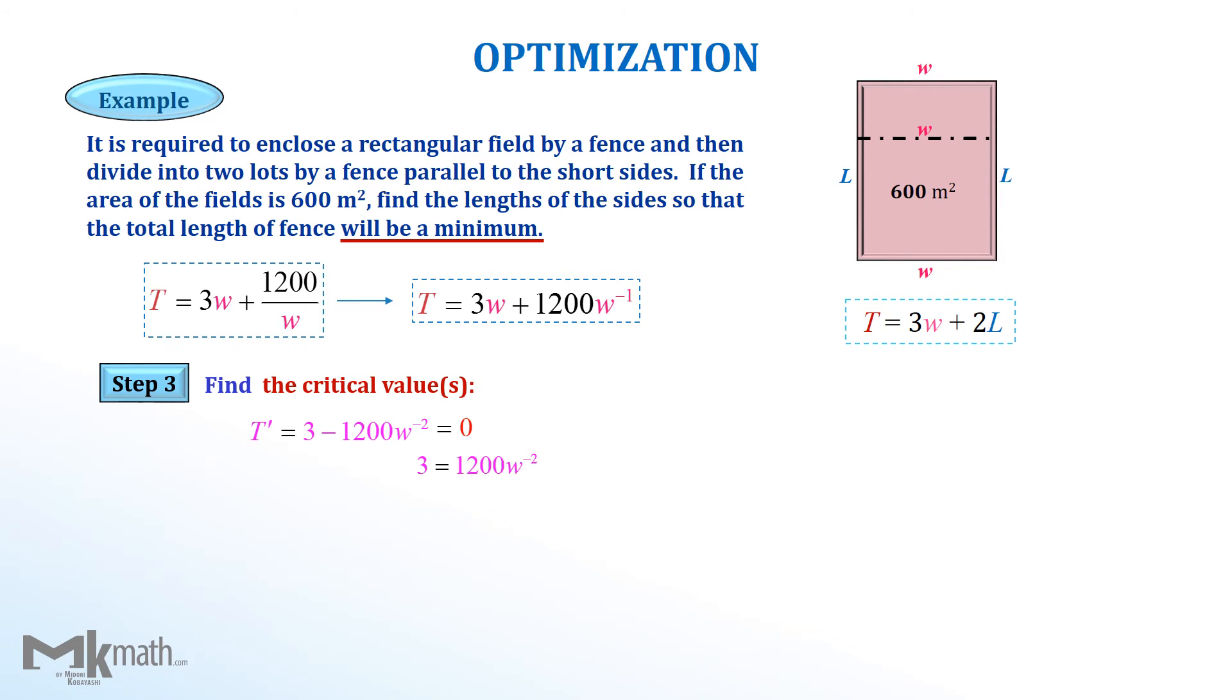Moving the 1,200 over W to the negative 2 power term to the right, multiplying both sides by W square, dividing by 3, and taking square root to get the critical values as plus or minus 20. Since the length cannot be negative, we eliminate the negative critical value. We have now the critical value as 20 meter, which is the possible minimum value.